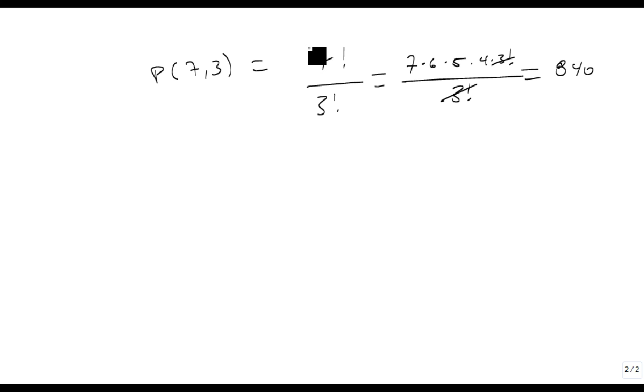And again, keep in mind, the closer these numbers are to each other, the smaller this number gets. And so that's one way of keeping track of does this number make sense or not, is the closer they are together, the smaller the number of results we can possibly have. But that's how we count permutations, R at a time.